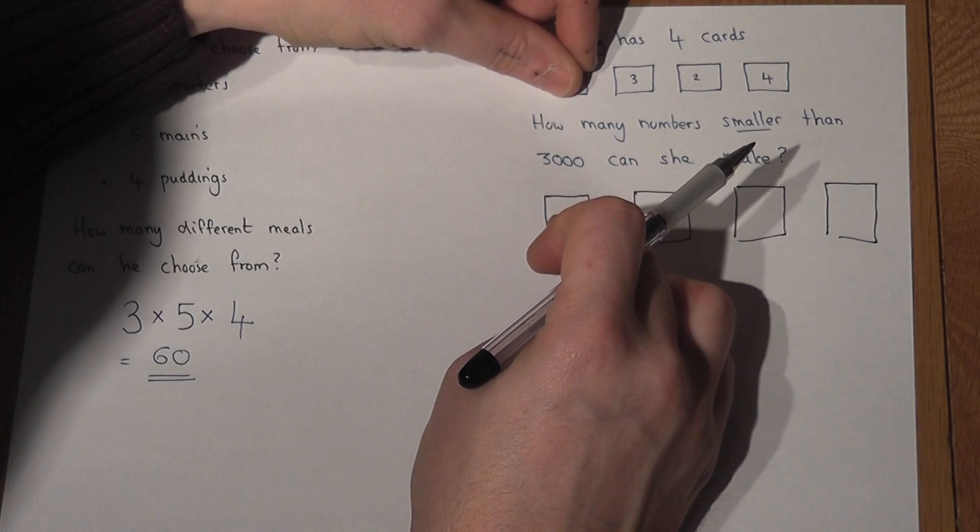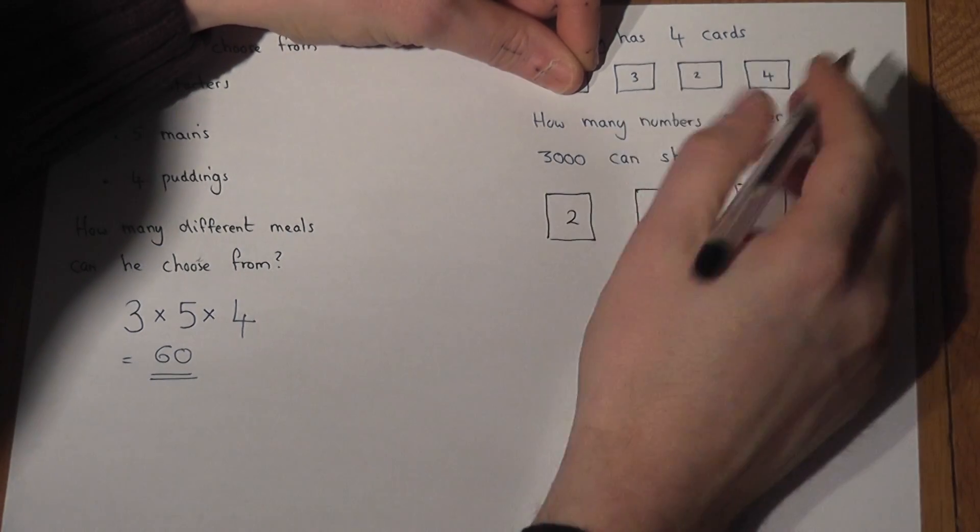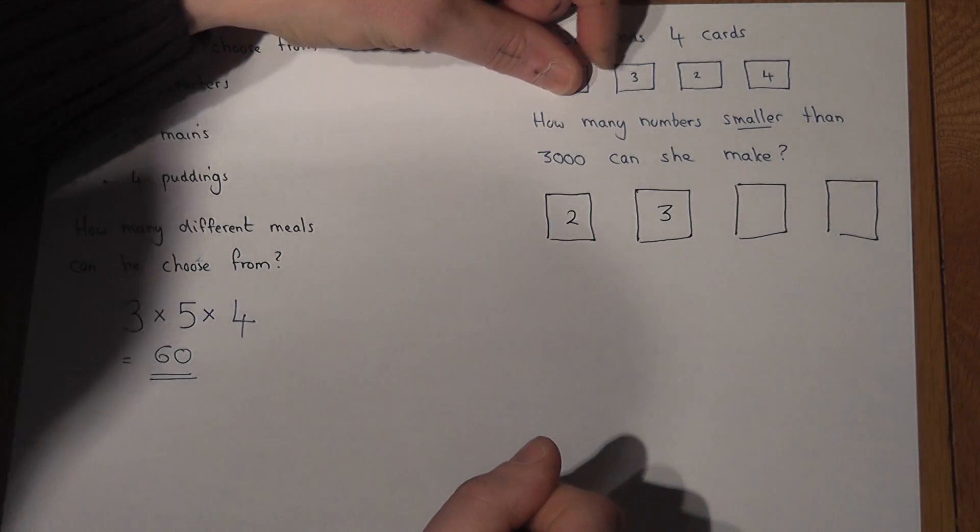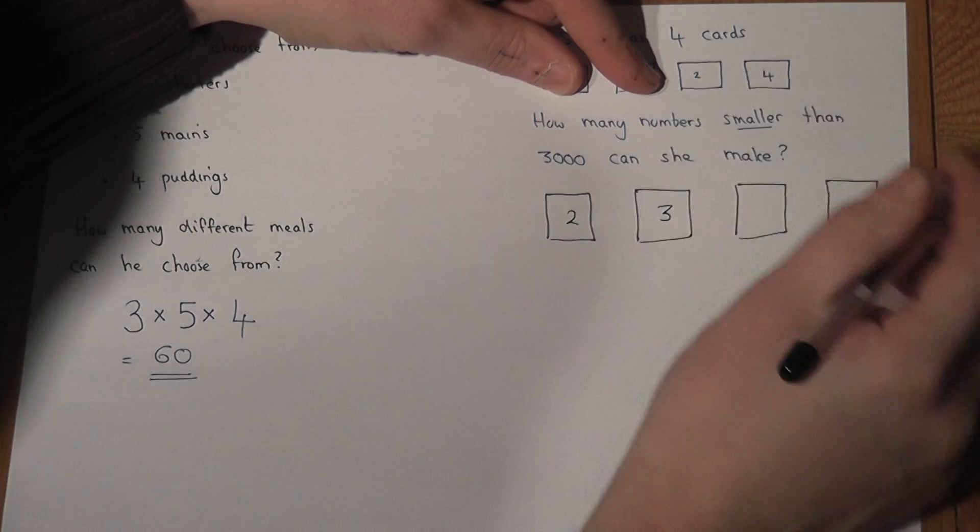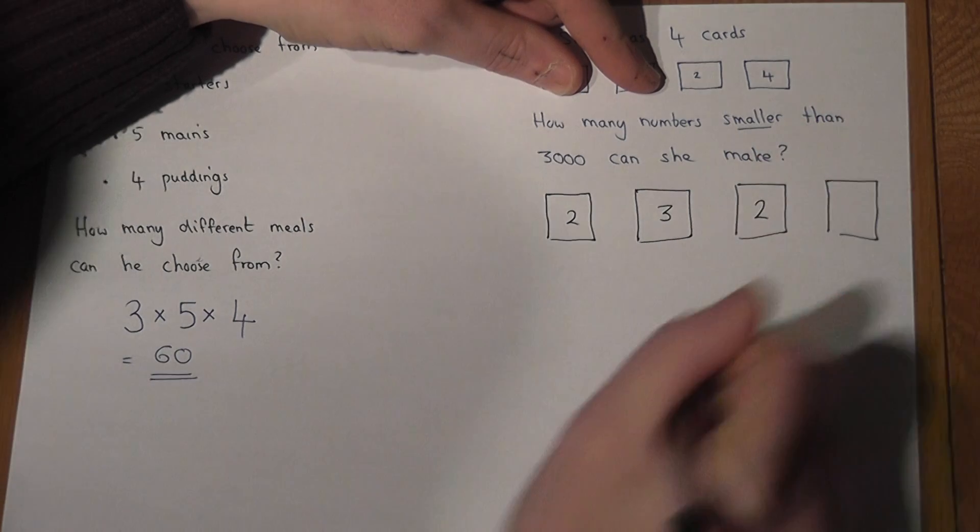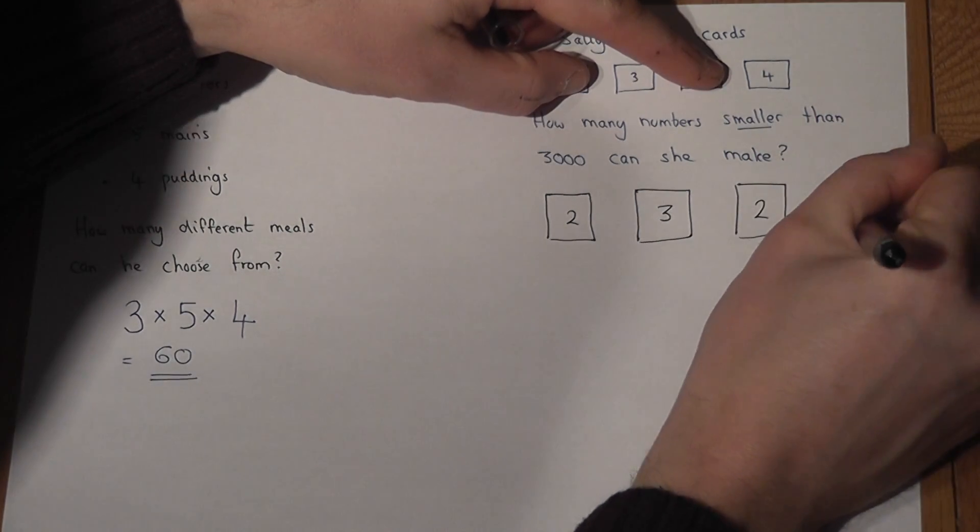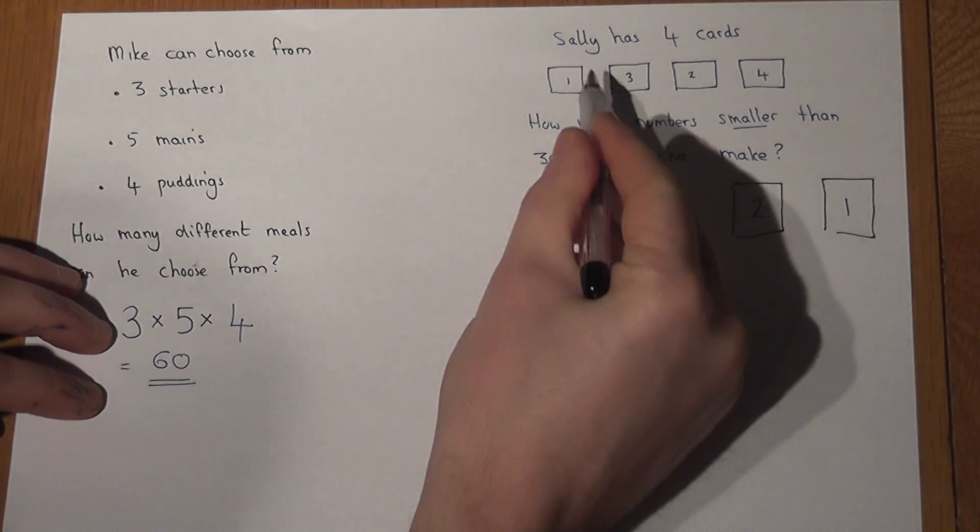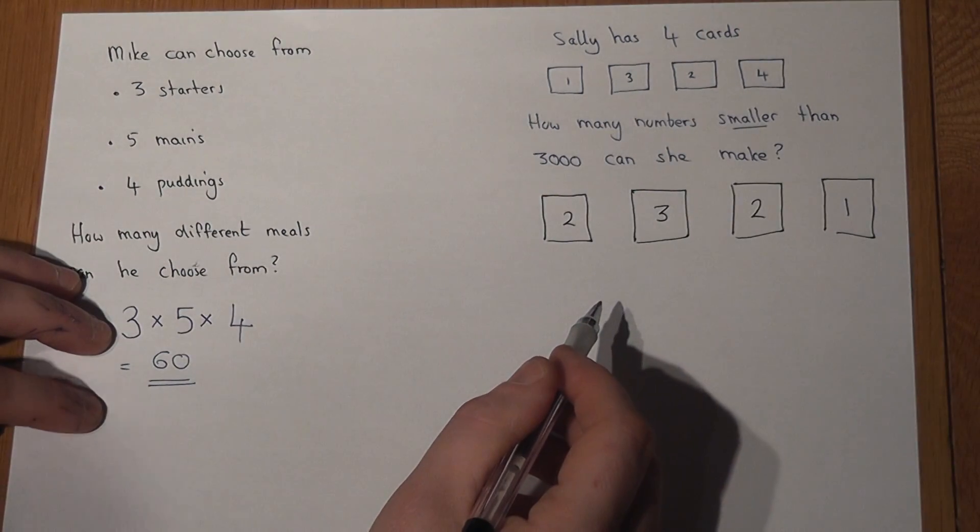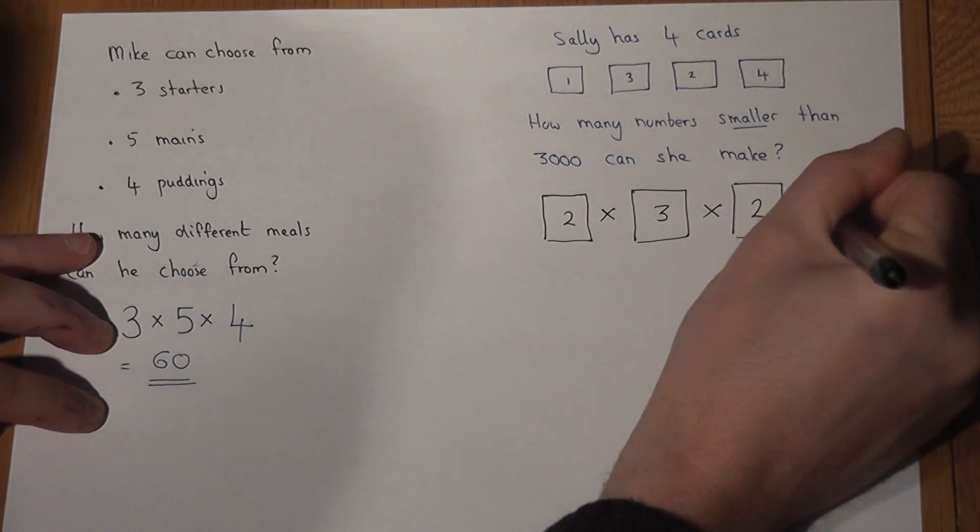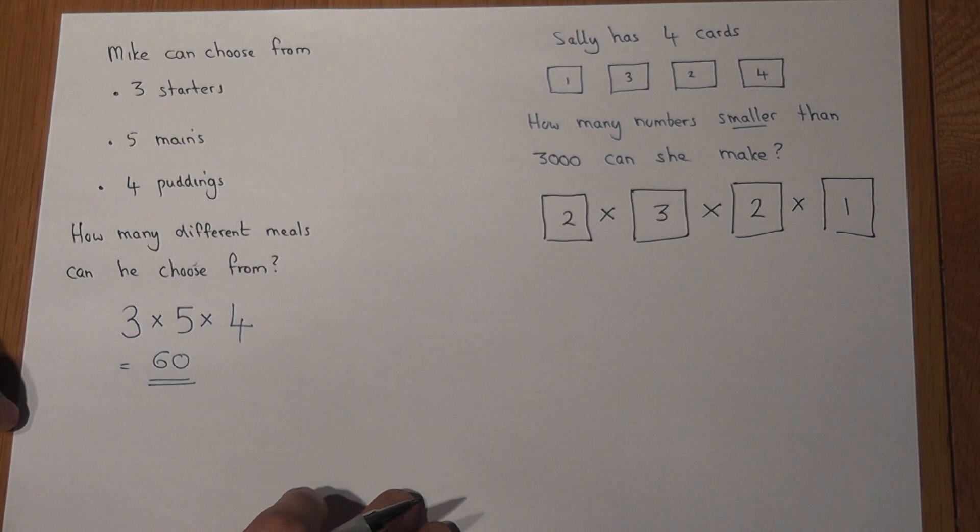Having picked one of them, there are three options left. Then having picked those, there's only two options left, and having picked one of those, there's only one option left. And again, these are not the numbers, they were the number of options.